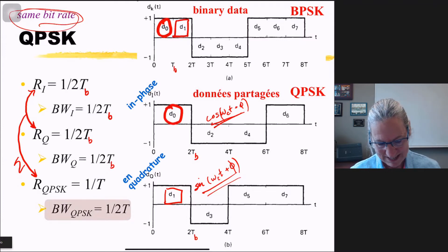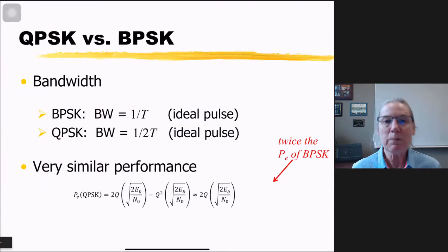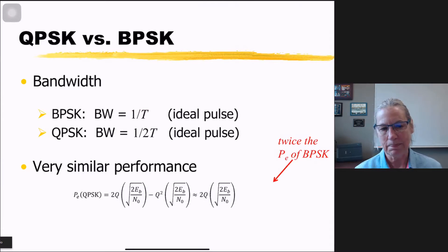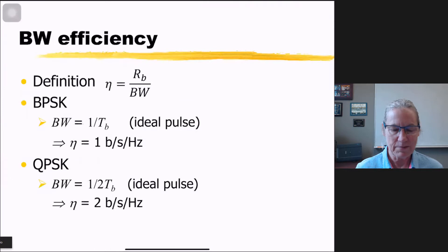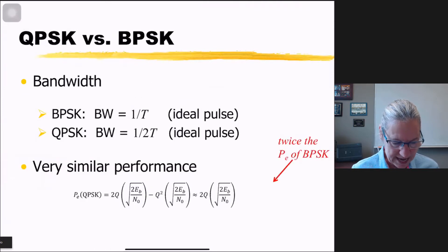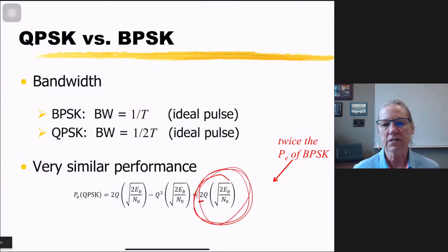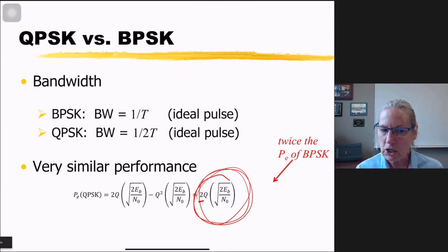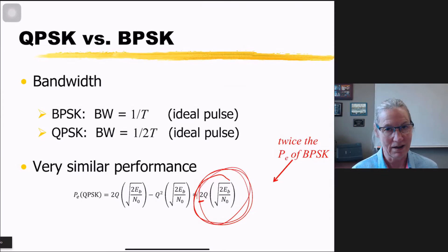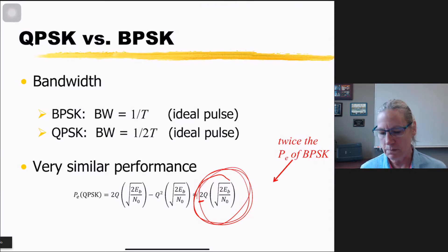This means QPSK is twice as spectrally efficient — it takes up half the spectrum compared to BPSK. Interestingly, the probability of error for BPSK and QPSK is very similar; the difference is a very small factor. There may be differences in complexity, but the factor-of-two spectral efficiency gain is huge, which is why we often see QPSK as the modulation of choice over BPSK.